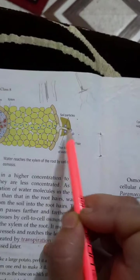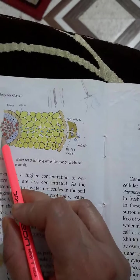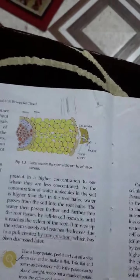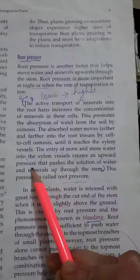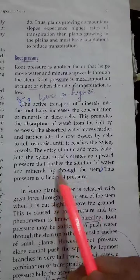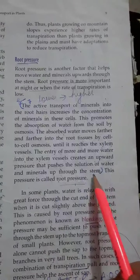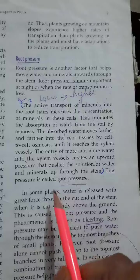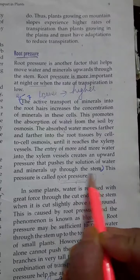Here in this diagram you have already seen that from root it goes from cell to cell. When it reaches to the xylem, it creates an upward movement or pressure that pushes the solution of water and minerals up through the stem. This process is called the root pressure.